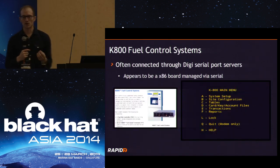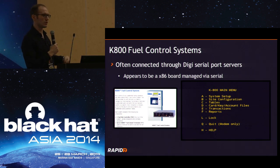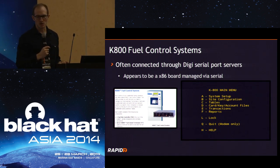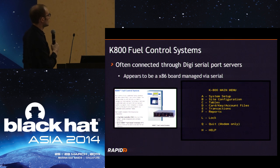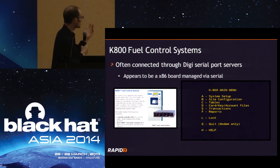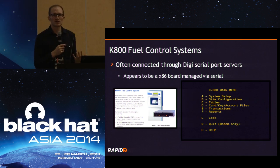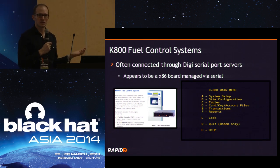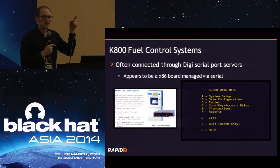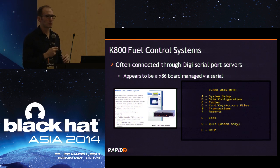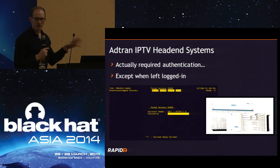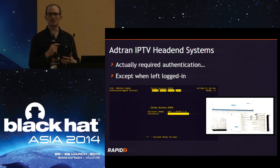There are fuel control systems — fuel pumps where you fill up your car — connected via the serial port server. You connect to a Telnet port and you're given a menu: system setup, transaction reports. The question is, what happens if I go into system settings? Will it require authentication, or is it directly configurable? Can I maybe drive up, log in, and activate the fuel pump to fill up for free? The cat picture is accurate.